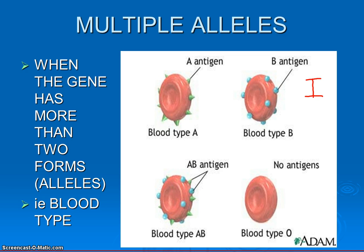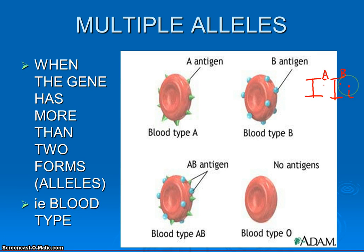We can have three forms here. They can have the A form of the gene — we see this little superscript A denoting it's the A form of the I gene. They could also have a B form of the gene. Now these are two alleles, but as the name multiple alleles implies, there's actually a third form of the gene, which is recessive to both of them. We'll use a lowercase i, because this allele is recessive to both of those. That one codes for no proteins on the surface of the blood cell — neither A nor B.